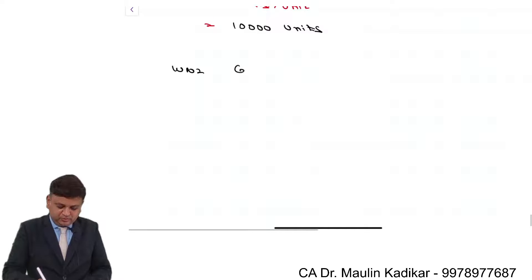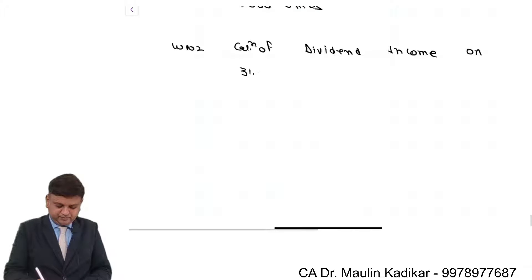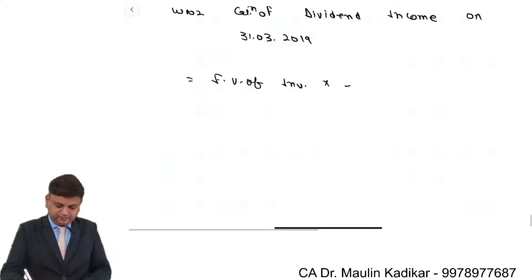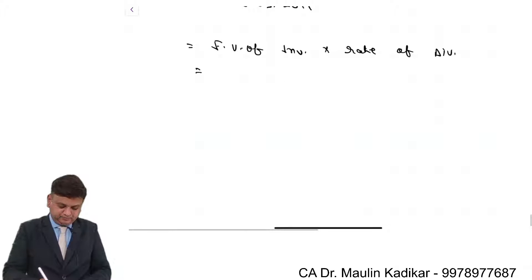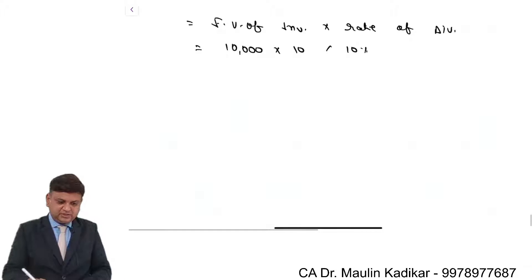Working Note 2: Calculation of dividend income on 31st of March 2019. Of course it is reinvested. It is face value of investment multiplied by rate of dividend, so 10,000 units into face value of Rs. 10, that is Rs. 1 lakh into 10%, which comes to an amount of Rs. 10,000.